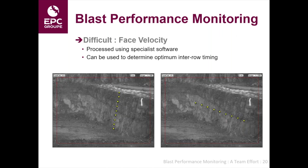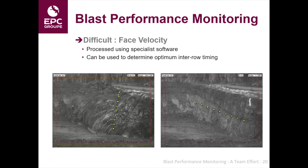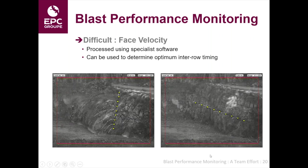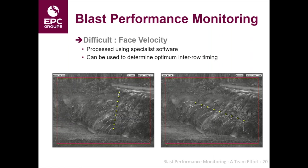We can also measure face velocity using specialist software with a standard video camera — you just need to video at an angle to the face. What you do is put markers where the yellow dots are on the face in the video, not physically on the face, and then the video software will track that particular point on the face. You can see that around the middle of the face it's moving more than the bottom of the face, which is what you'd expect, with not so much movement in the stemming area. In the other example, markers are run horizontally along the face to see consistency along it. We can use these measurements to determine what the optimum inter-row timing is, for example.